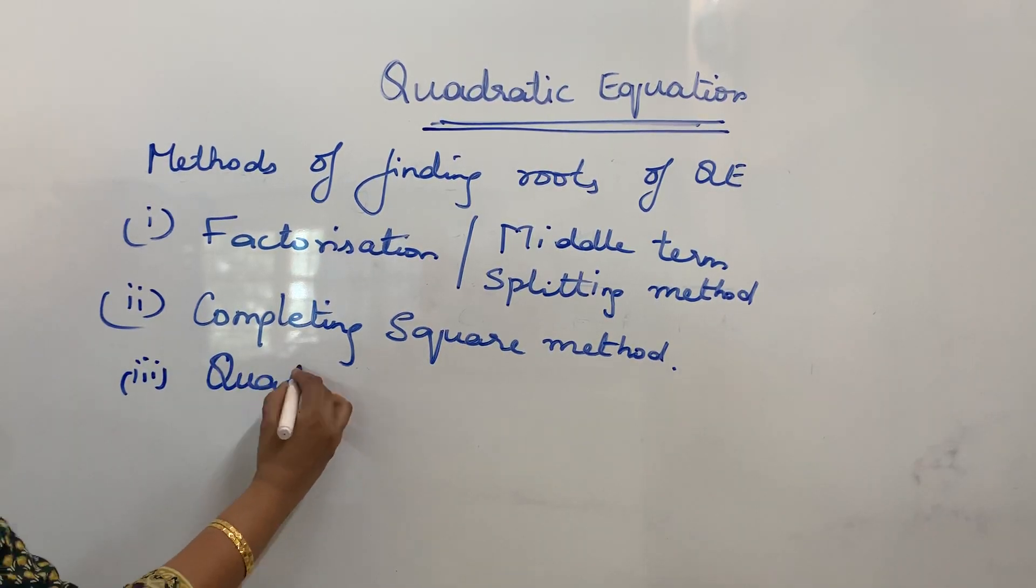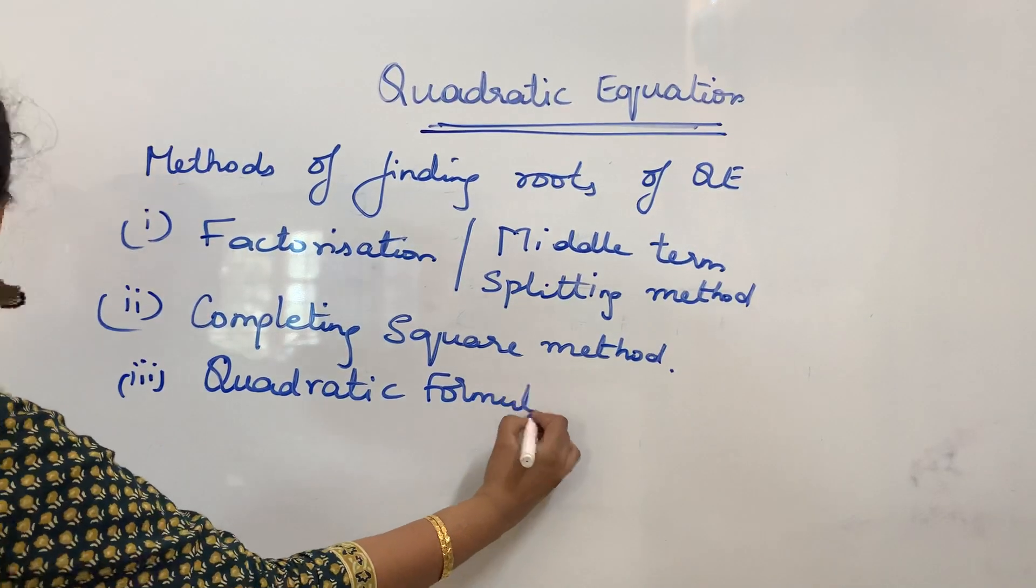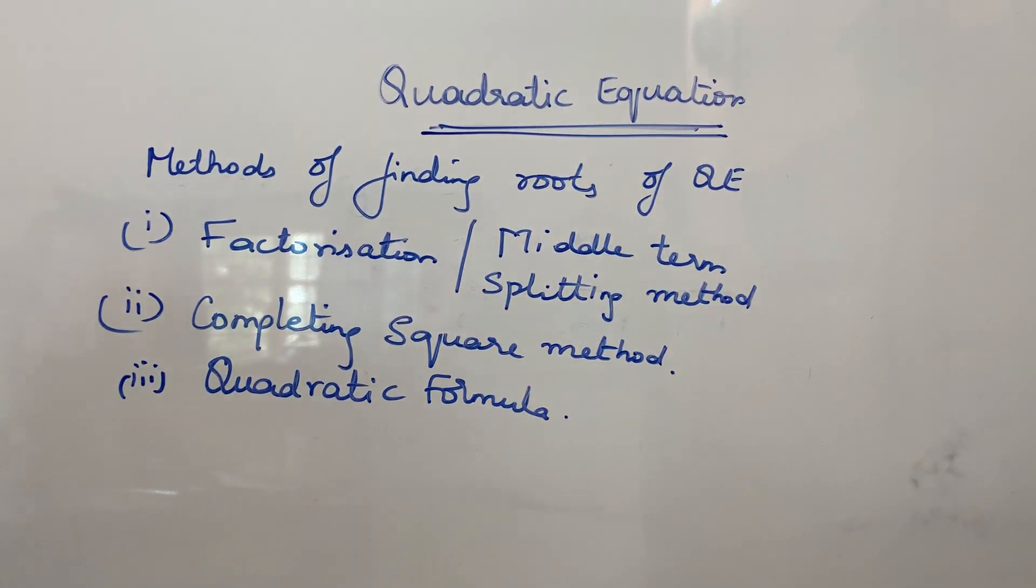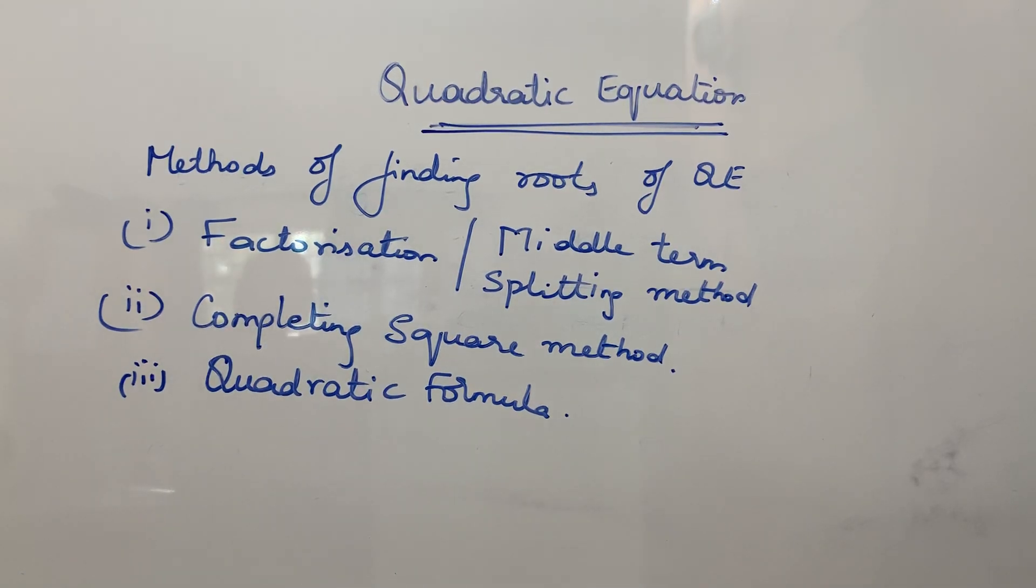Now the last method is finding roots by using quadratic formula. So these are the three methods. Now I will just brief you on the factorization or middle term splitting method with a few examples.